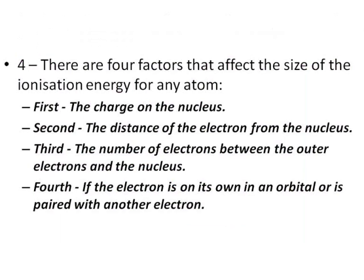Four, there are four factors that affect the size of the ionization energy for any atom. One, the charge on the nucleus. Two, the distance of the electron from the nucleus. Three, the number of electrons between the outer electrons and the nucleus. Four, if the electron is on its own in an orbital or is paired with another electron.